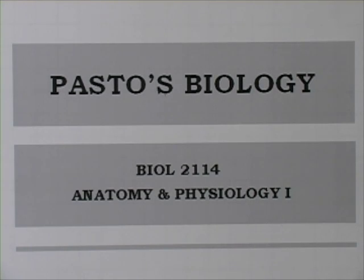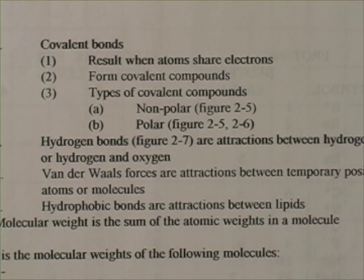Pasto's biology, topics from the study guide. Continuing with covalent bonds, we said a covalent bond results when atoms share electrons. A very important idea is the concept of nonpolar and polar molecules or types of covalent bonds.